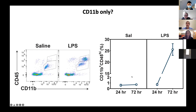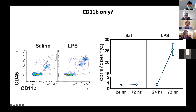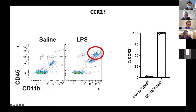While this method works well for a truly healthy young brain, you can run into problems when there are perturbations that increase peripheral immune cell infiltration. One instance is a peripheral injection of the bacterial endotoxin lipopolysaccharide (LPS), which causes a massive increase in the number of CD11b positive cells that are also high for CD45. A huge caveat of the protocol as published is that the single-antigen method would pull down both resident brain microglia and the peripheral macrophages that have infiltrated into the brain.